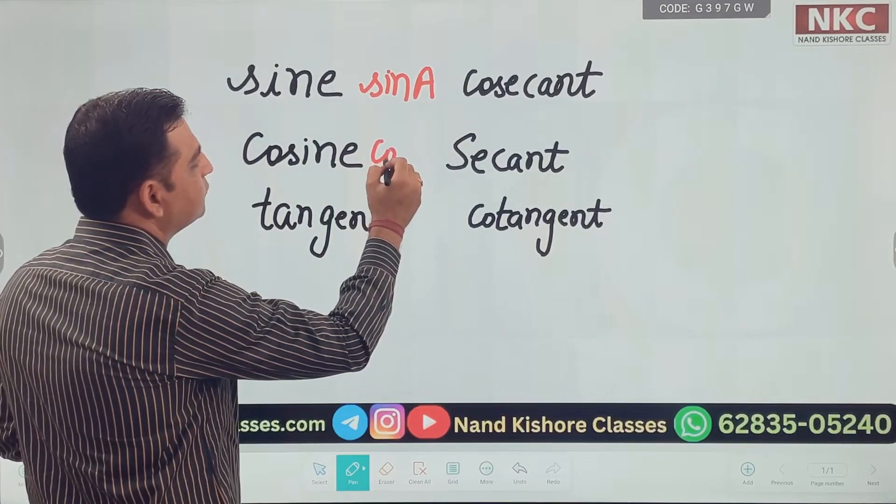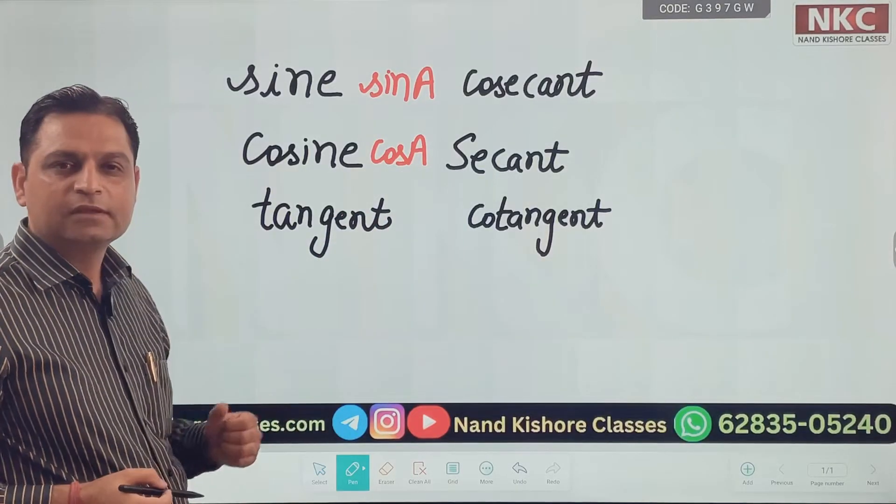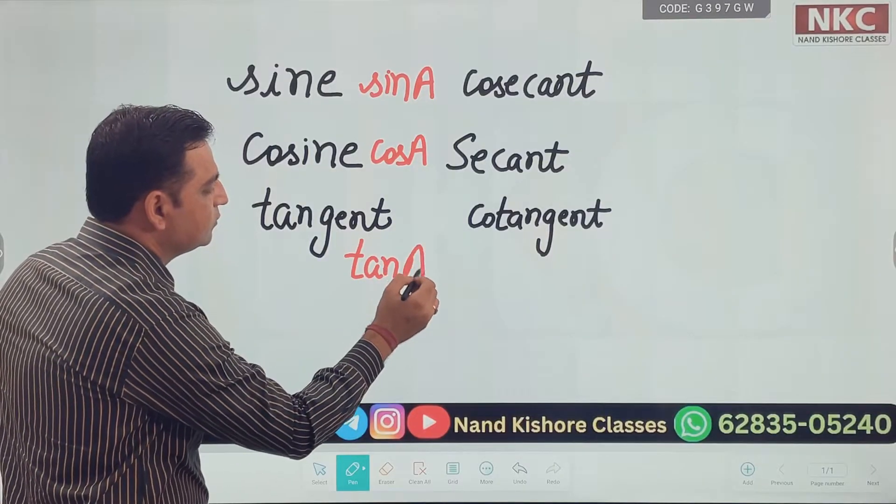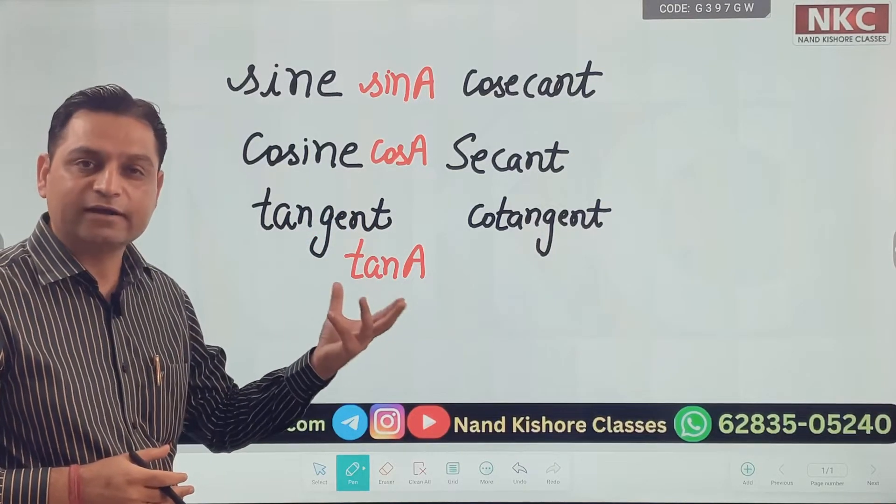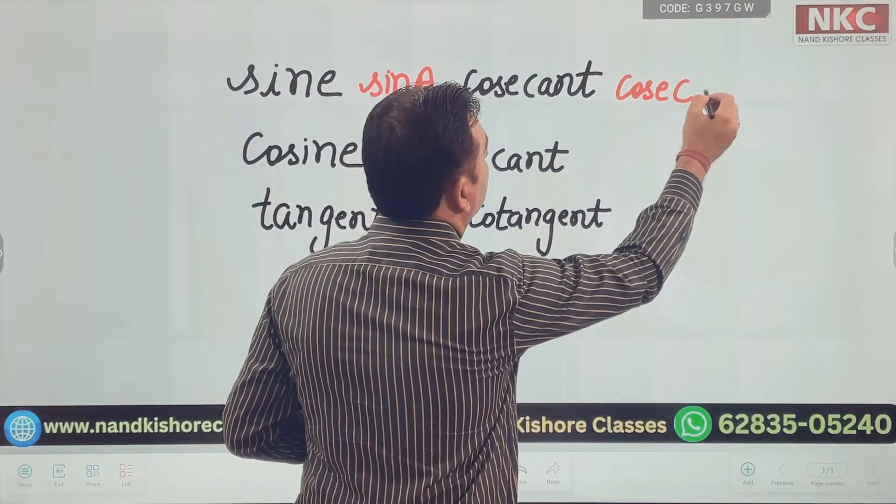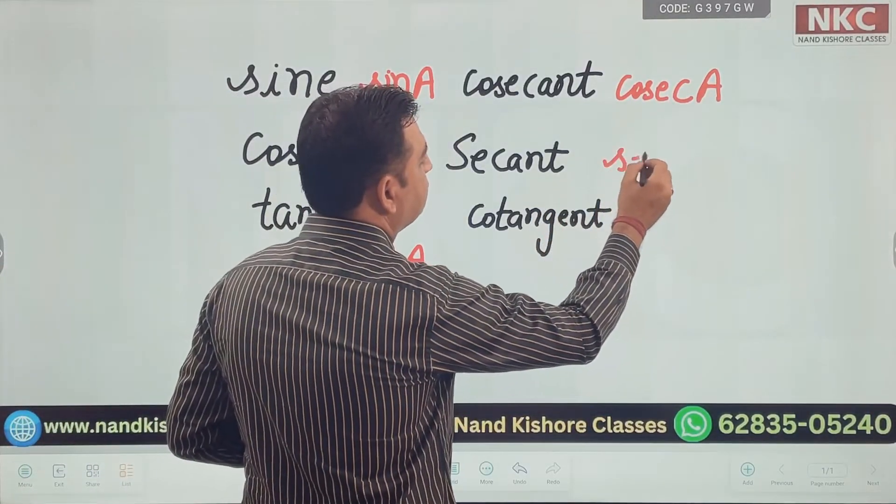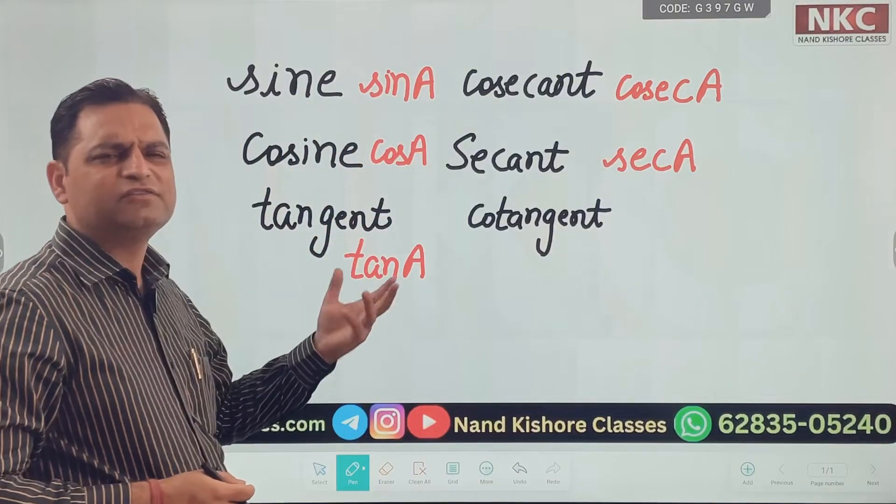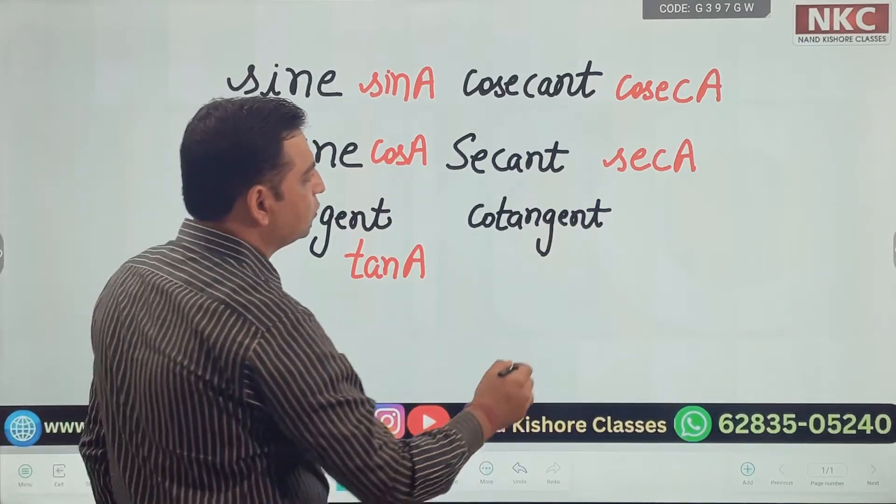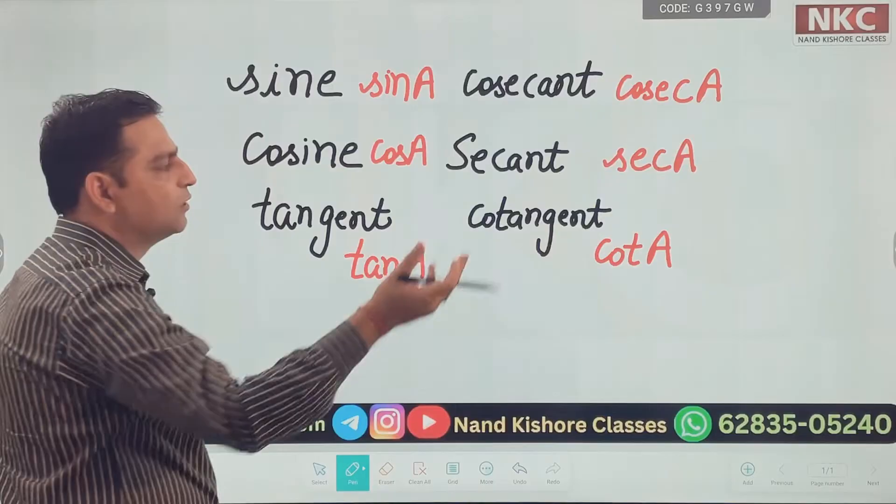Cosine will be written as cos. We call it cos A. Tangent. Tangent is written as TAN only. Tangent A. A is the angle along with this. This is written as cosec. Cosecant A. Secant A. Don't call it sec A. It seems odd. It is secant. S-E-C. And cotangent is written as C-O-T. So, these all are the short forms.